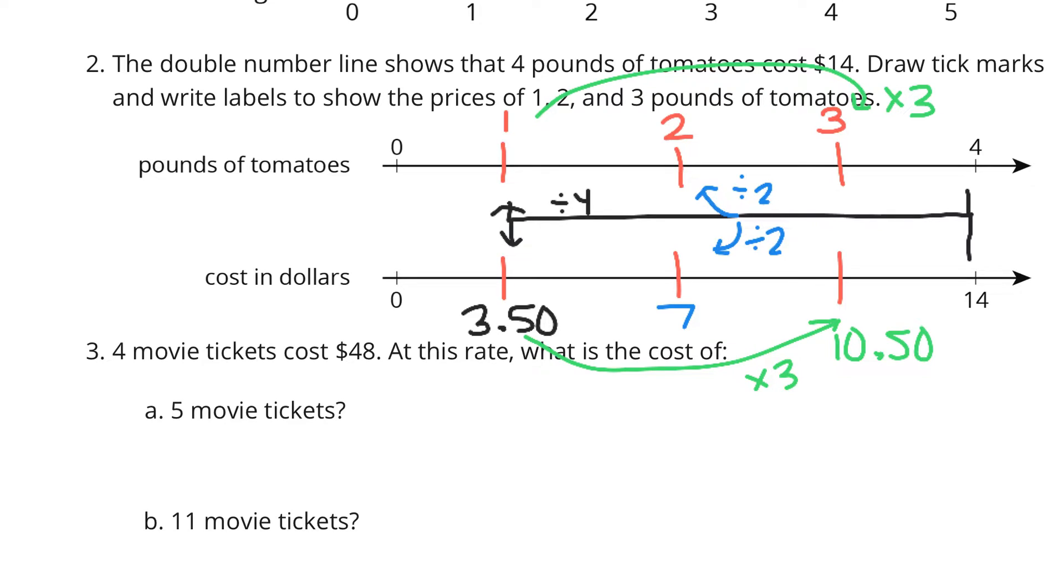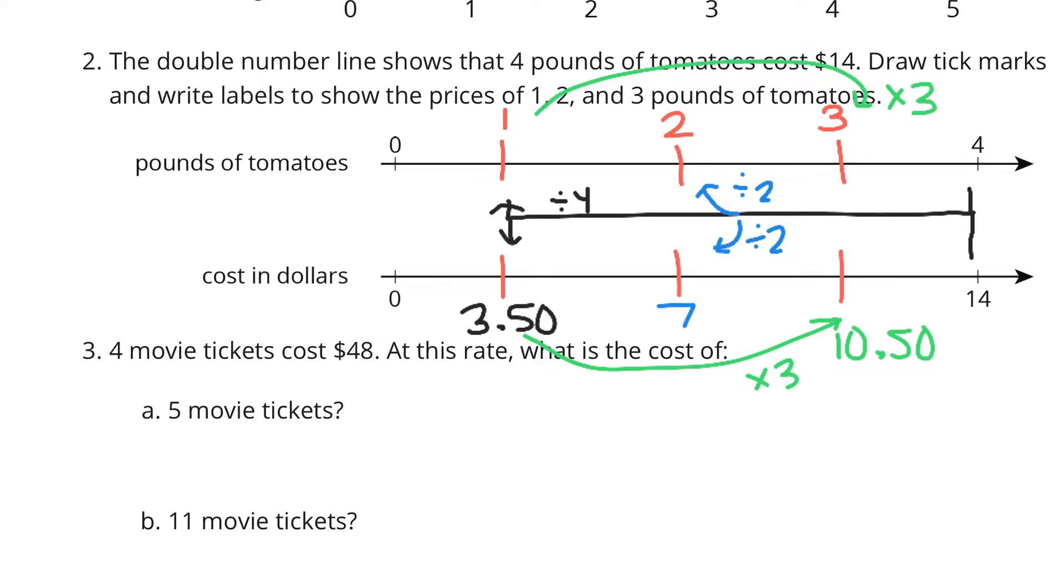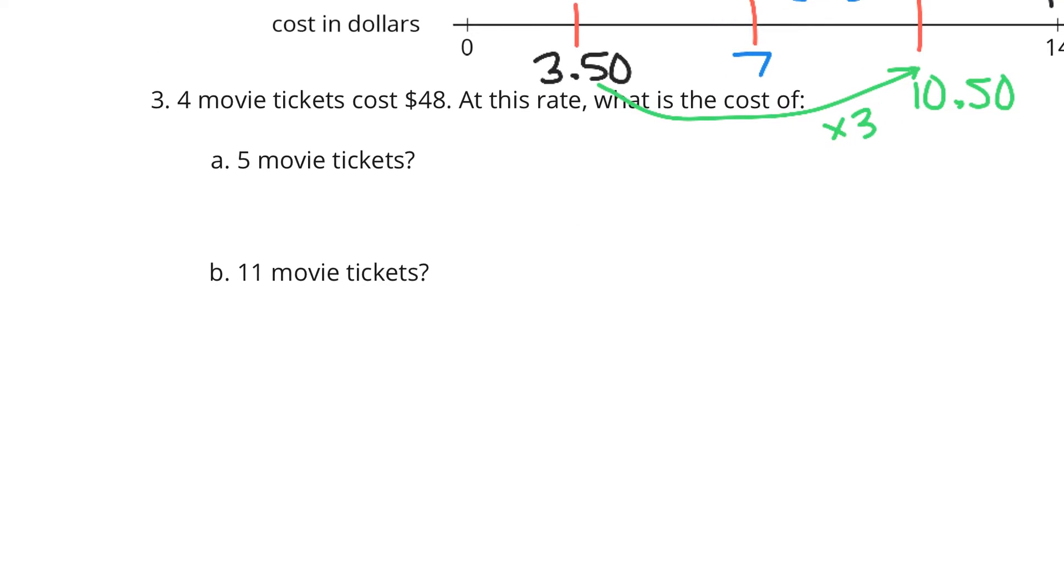Now, 4 movie tickets cost $48. At this rate, what is the cost of 5 movie tickets and 11 movie tickets? Well,